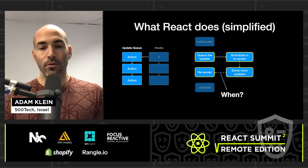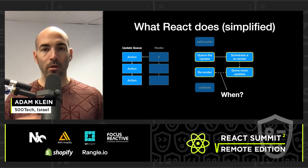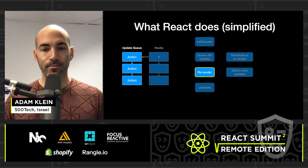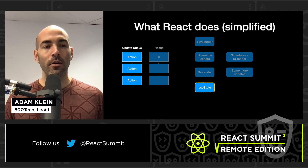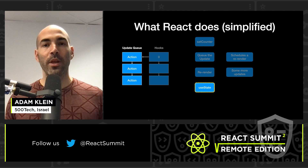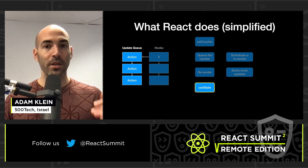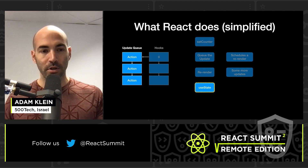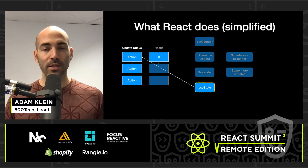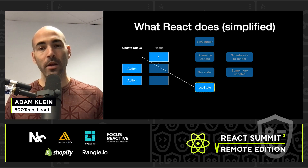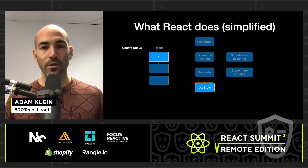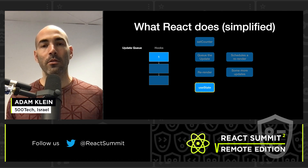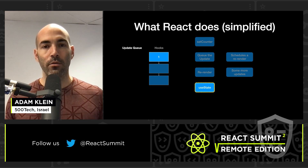When does React decide to re-render? We'll talk about that in the last part of this talk. Eventually we re-render, we call useState during render, and only then — during render — does React perform the updates inside the queue. It takes the first action, gives it the previous value, gets back the new value which is one, and if there are more actions it continues to the next action one by one.